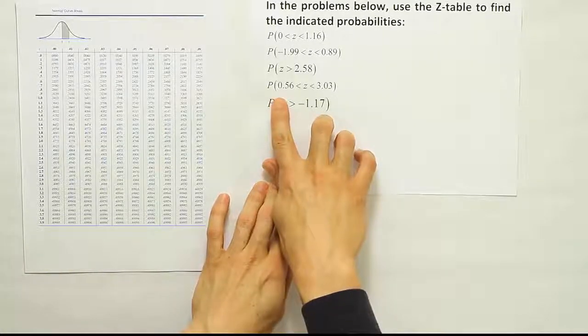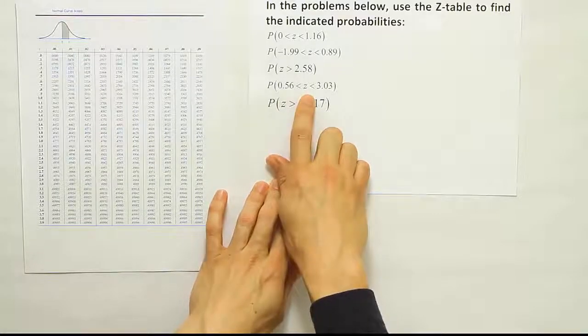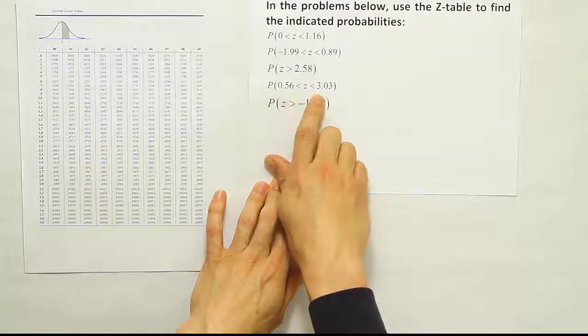Okay, so now we're doing the fourth probability here in the list, the probability that Z is between 0.56 and 3.03.